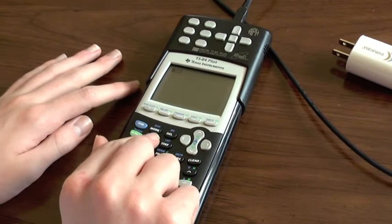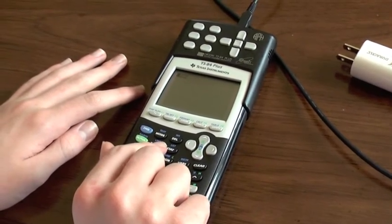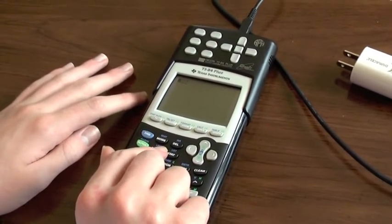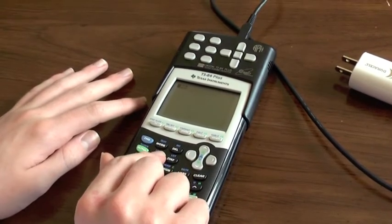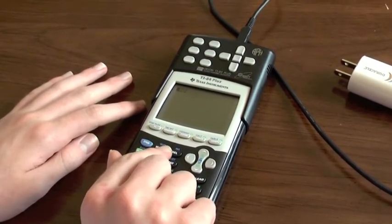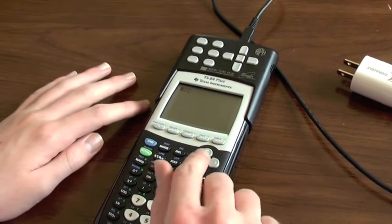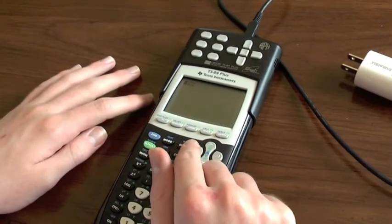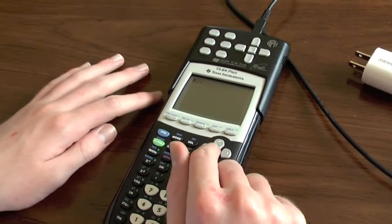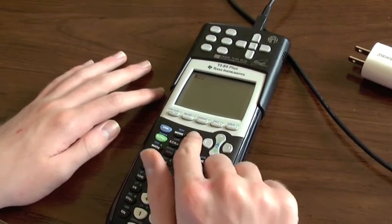Alpha activates alpha function mode. Alpha function mode is another mode like second mode that allows you to activate other functions of buttons because there aren't enough buttons on this calculator to do everything that it can do. So they have several layers of commands: the key by itself, alpha followed by the key, or second followed by the key.